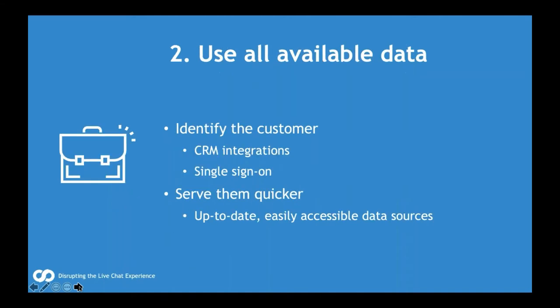Number two — chat hack: use all available data. When we're talking about data, you have data available within live chat by default. At the point that a person comes onto your website, you can see geographic information, visit history, information about the kind of system they're using — whether they're on mobile or desktop — and what pages on your website they're looking at. You have so much data to help you route intelligently and to identify the customer and meet their needs in a seamless way. Thinking about other ways to identify customers better — integrating CRM, which we've already spoken about, is definitely a great strategy.